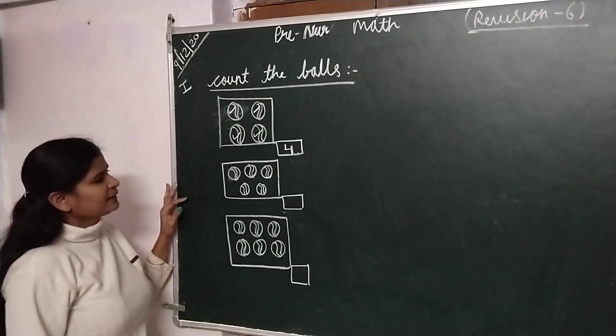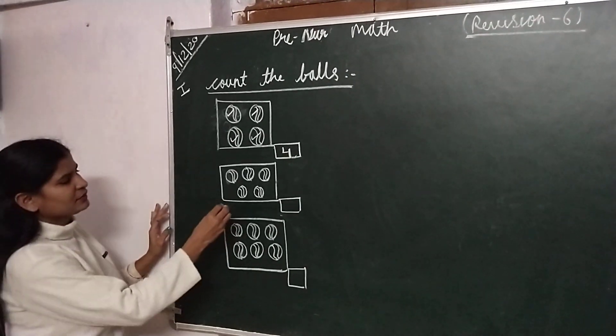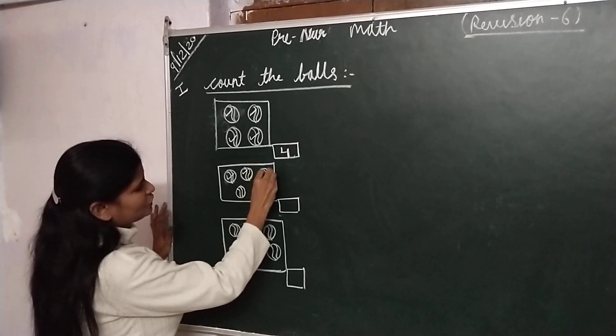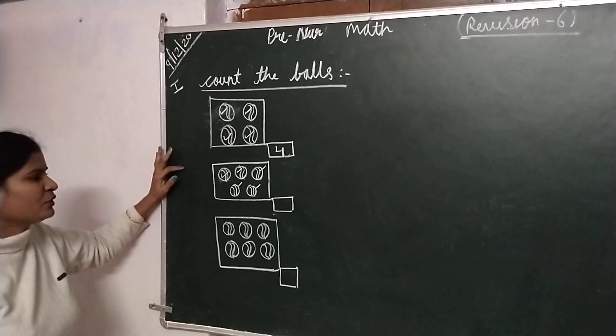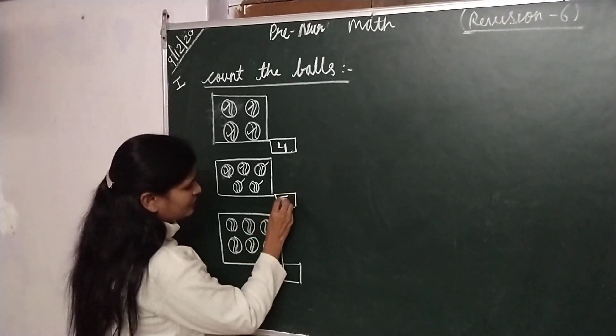Next number, in this box we are counted: 1, 2, 3, 4, 5. In this box, 5 balls, and we will write the answer here: 5.